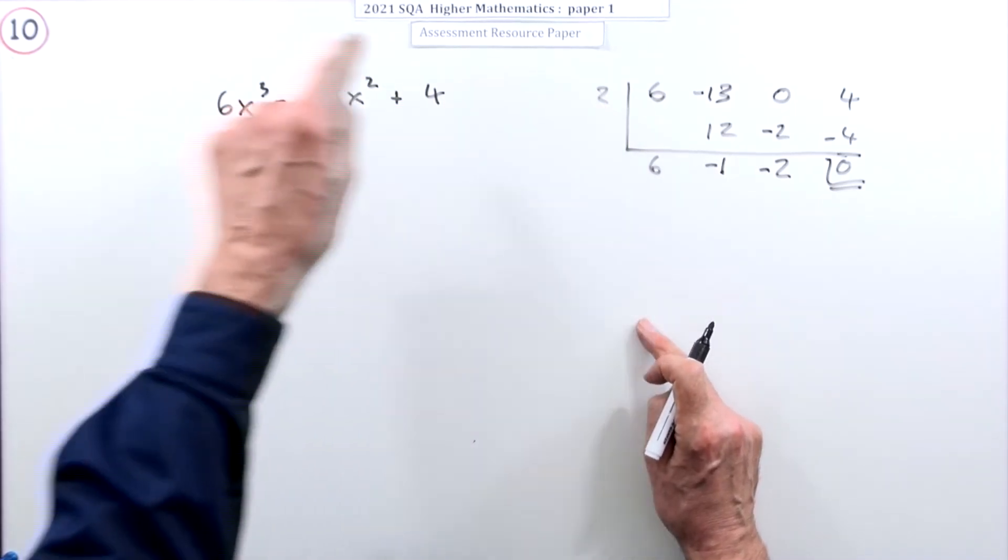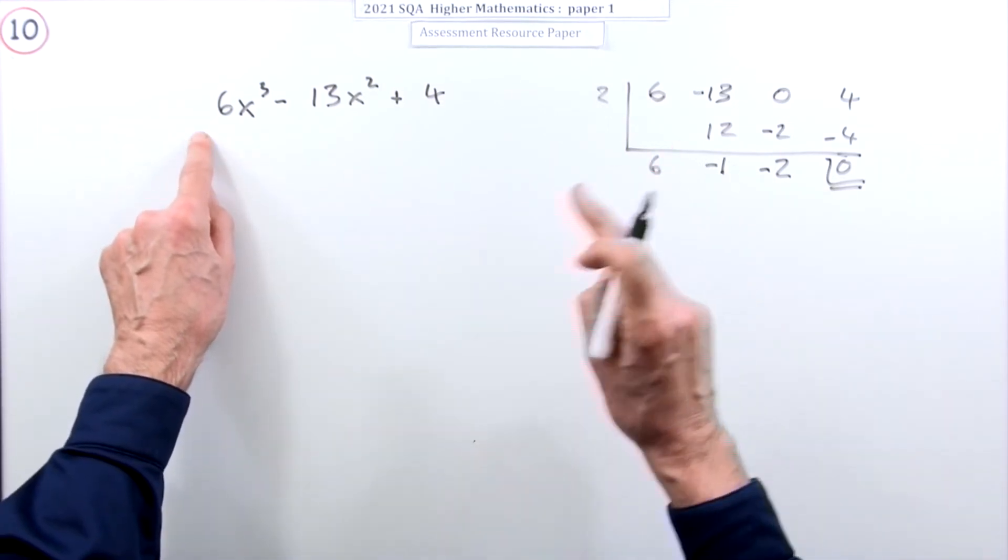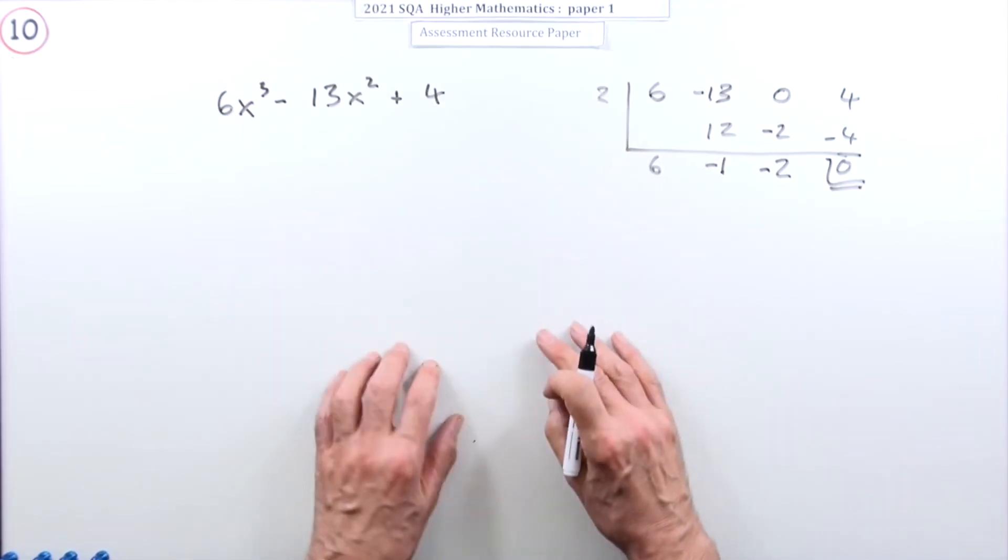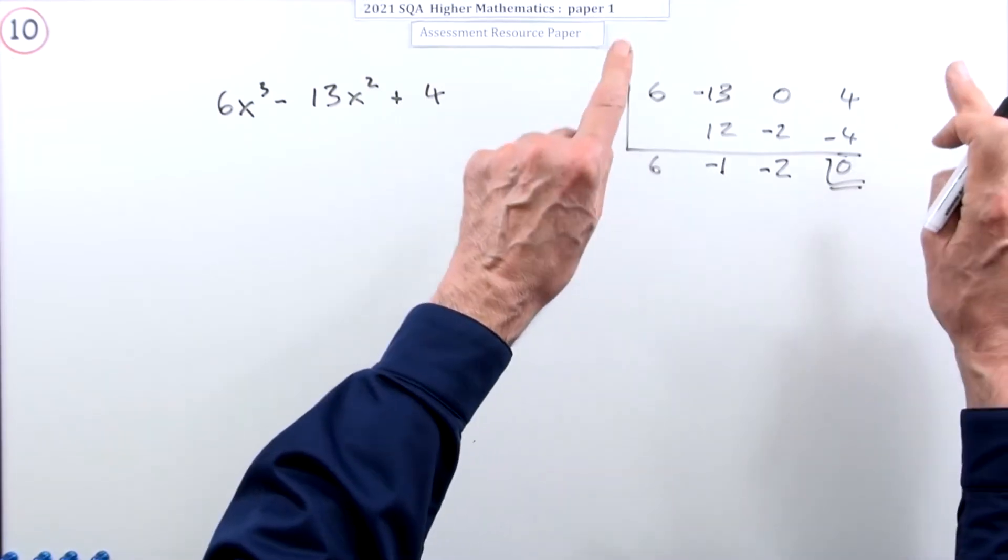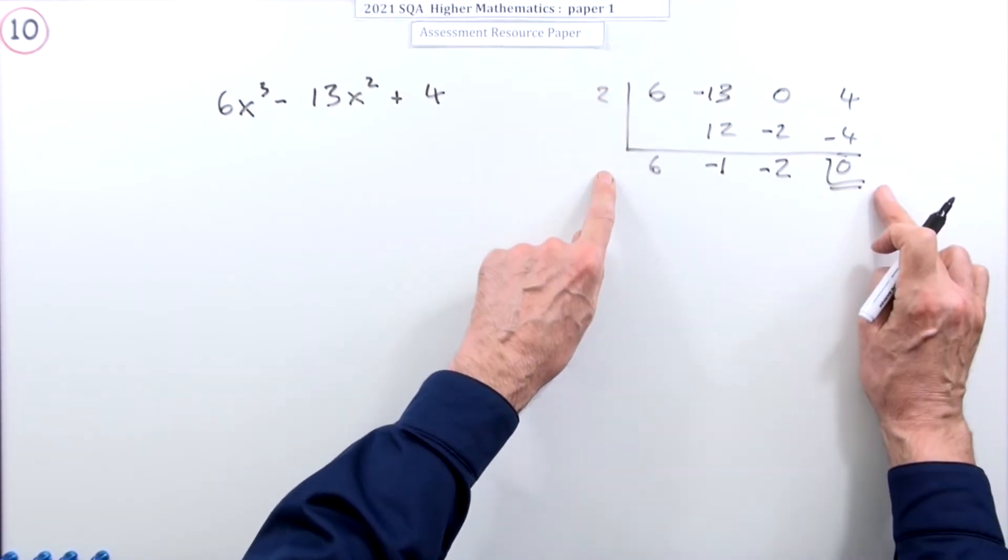This lets you evaluate this expression. Whatever you put in here will be the value that this will come to. So if you could put in a value that comes to zero, that means you've found a root of that equation equal to zero. If you're talking about roots, but since we're talking about factors, we're going to look at this as a division table, synthetic division table.